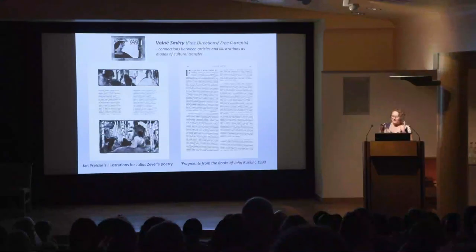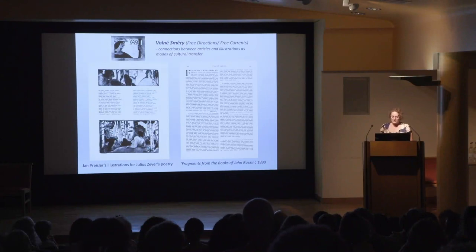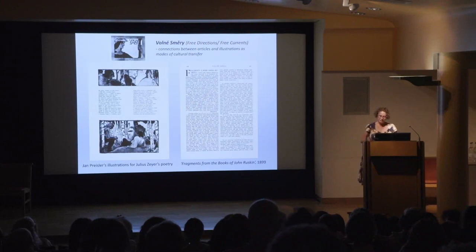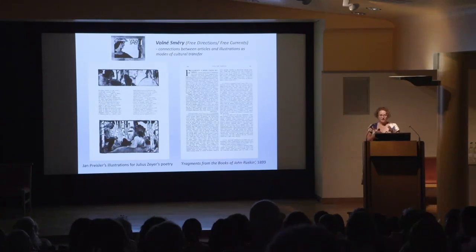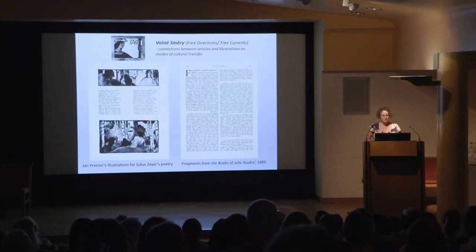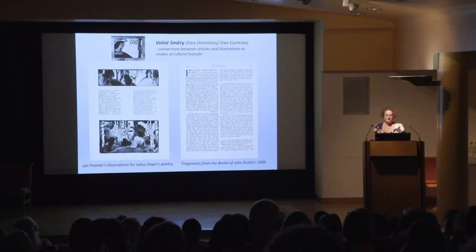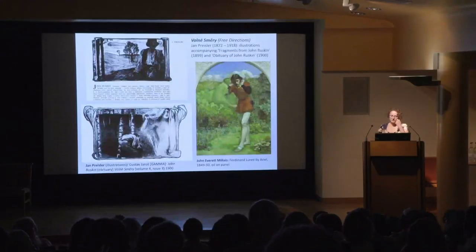The importance of art journals written in Czech was really transformative when it came to bringing news of the Pre-Raphaelites and their art into Czech consciousness. I'm looking specifically at the connections between articles and illustrations, looking at both as modes of cultural transfer — trying to decipher a link between the poetry, the texts, the translations, and also the imagery. Here, for example, is the Czech translation of some of the works of Ruskin from 1899, published next to a poem by Julius Zeyer.